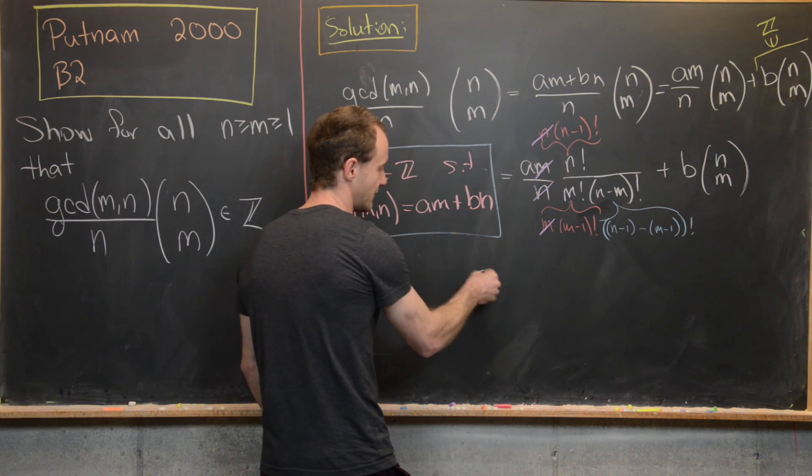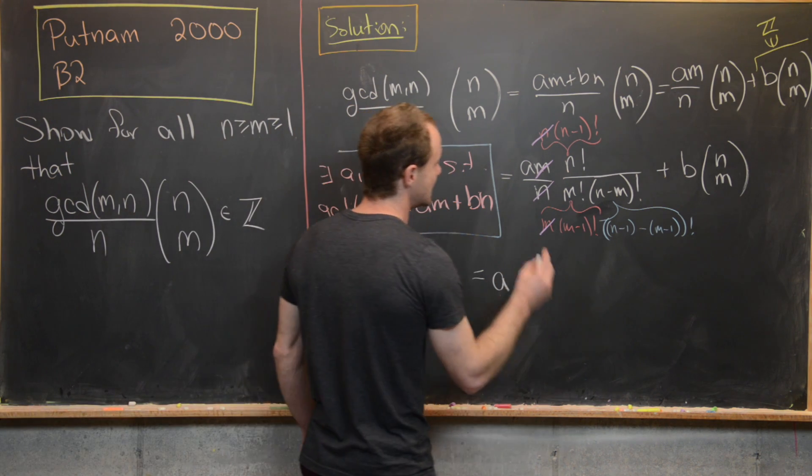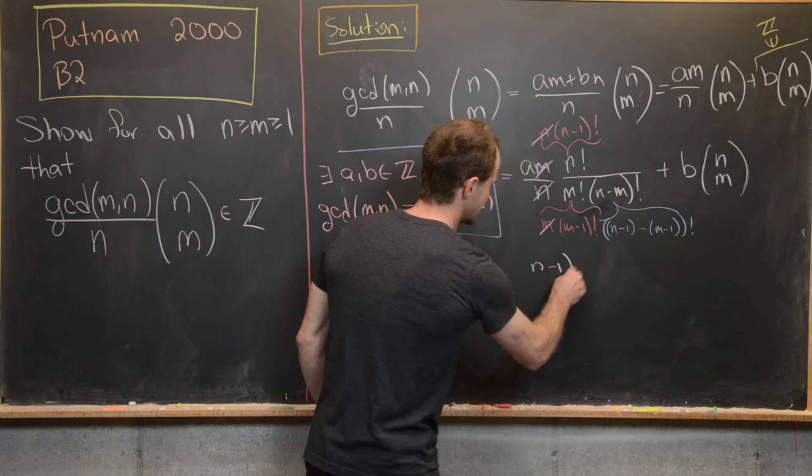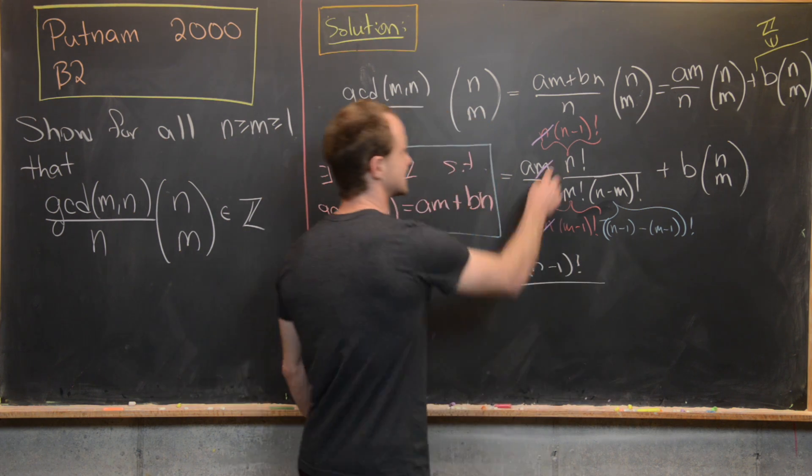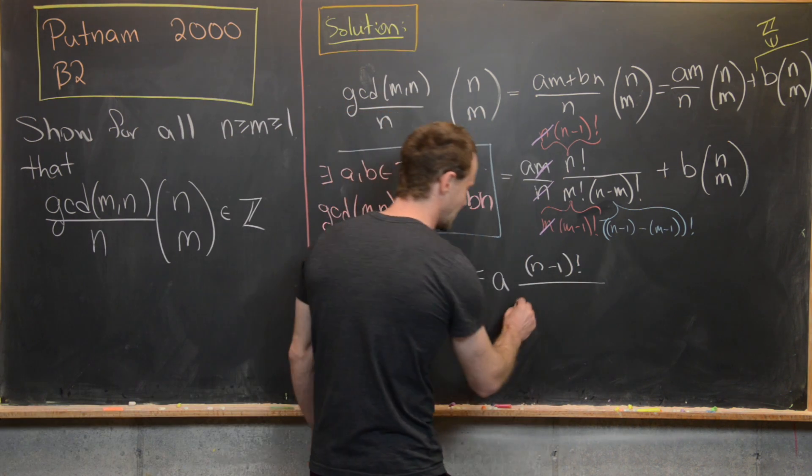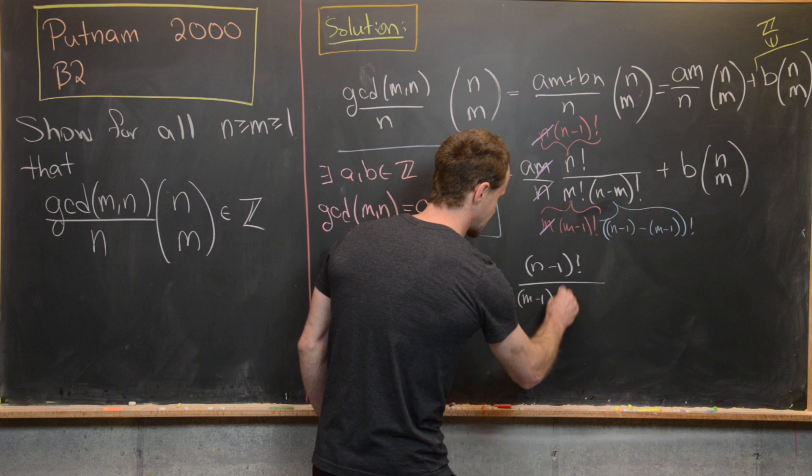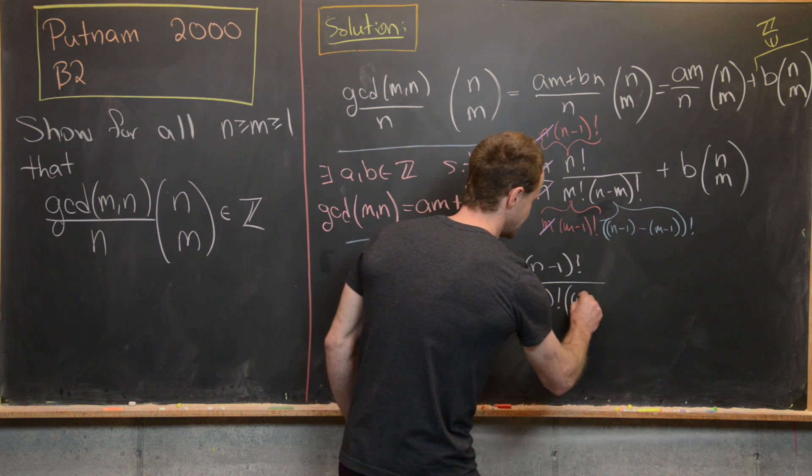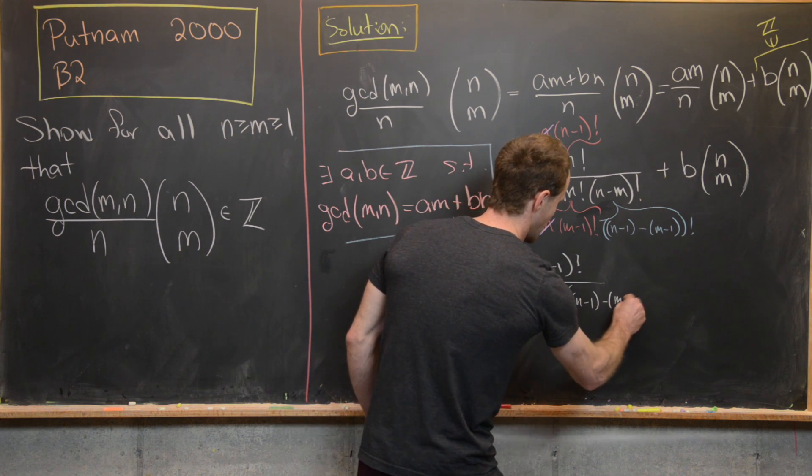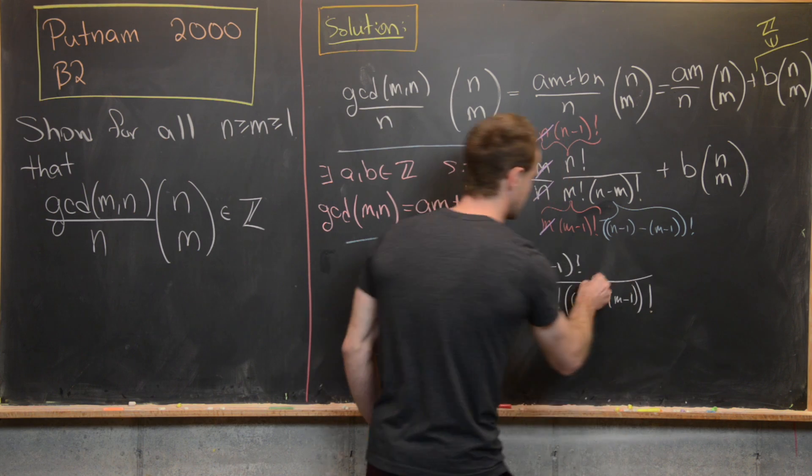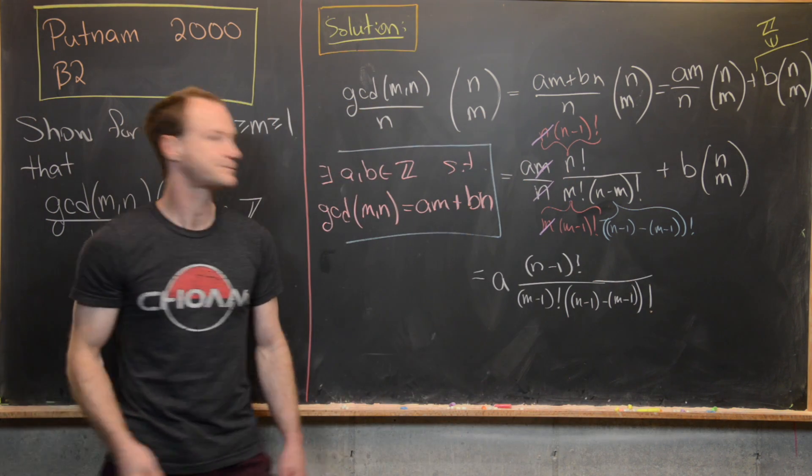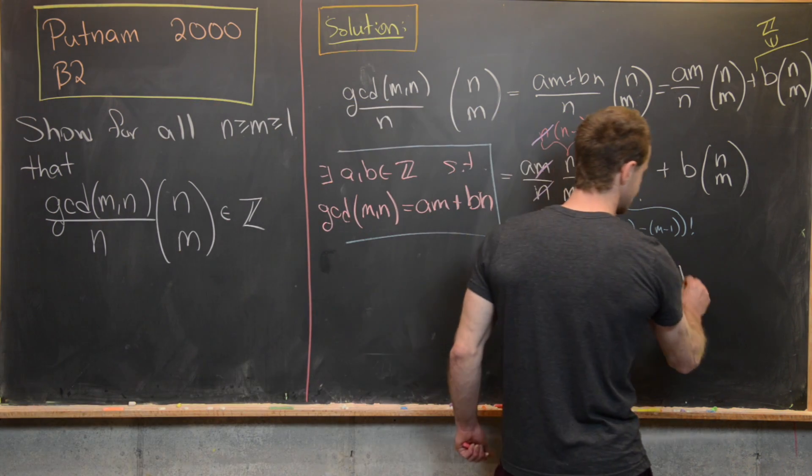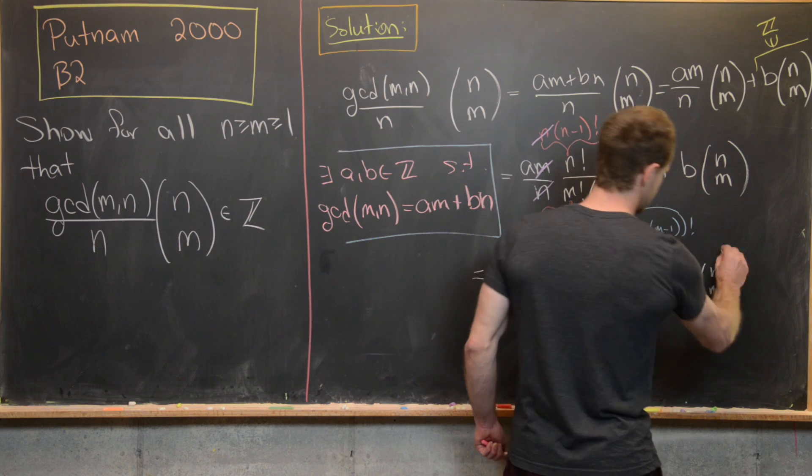So now let's write out what we have. We're going to have a × (n-1)! is what's left in the numerator. And then in the denominator, we have (m-1)! × ((n-1) - (m-1))!. So we've got that. And then we still have this plus b × (n choose m).